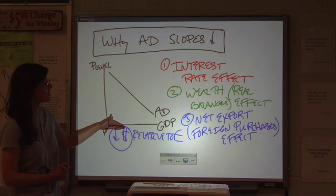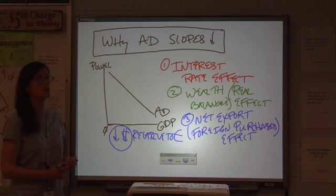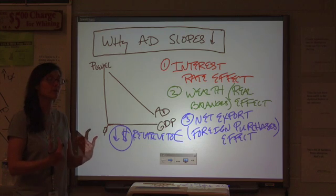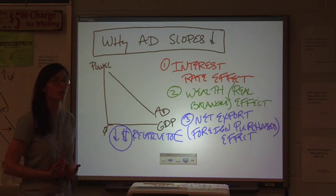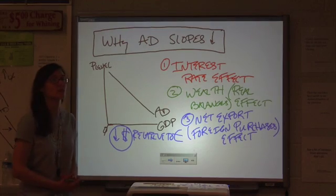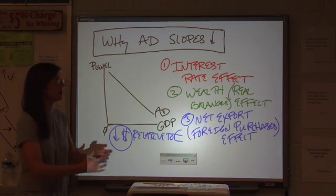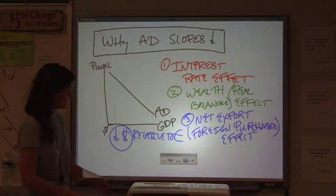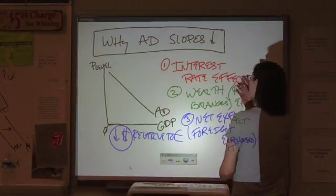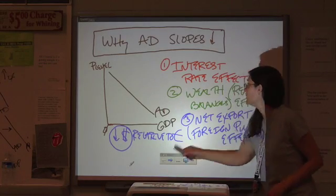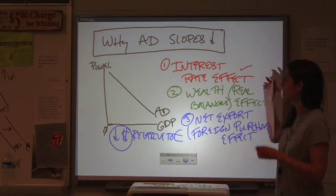If the dollar appreciates, then our stuff is relatively more expensive. People will buy less of it, our net exports will decrease. All of this stuff plays into this curve. So, for the first two, I think these are a little bit easier to understand.